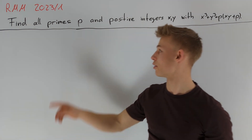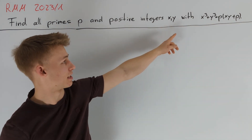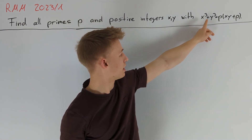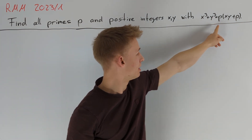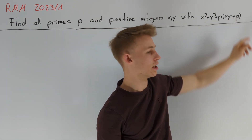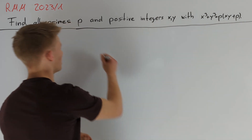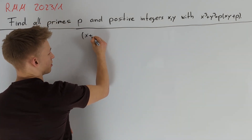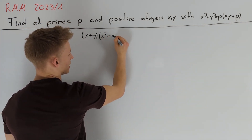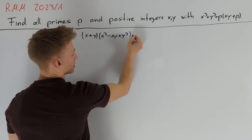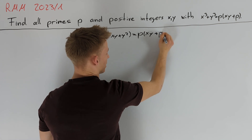We are asked to find all prime numbers p and positive integers x and y such that x³ + y³ = p·xy + p holds. We factor the left-hand side to get (x + y)(x² - xy + y²) = p(xy + p).